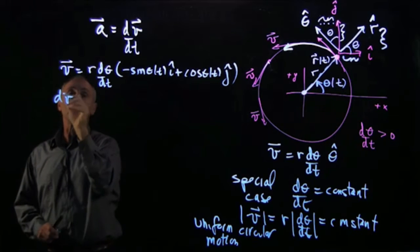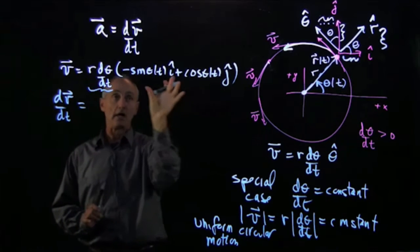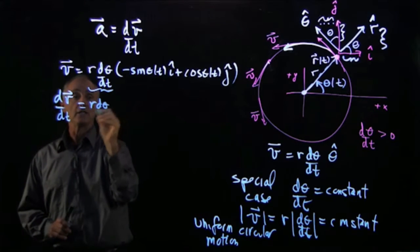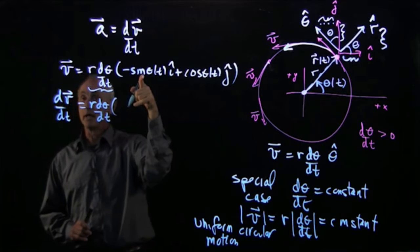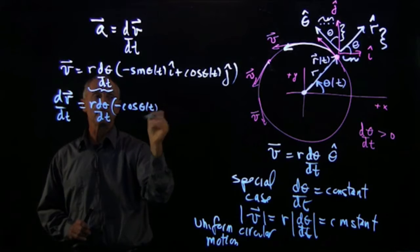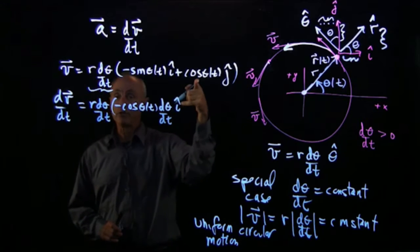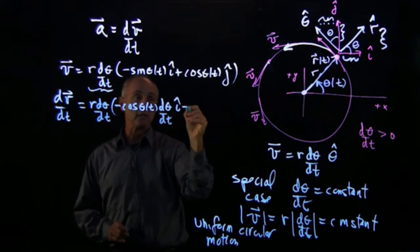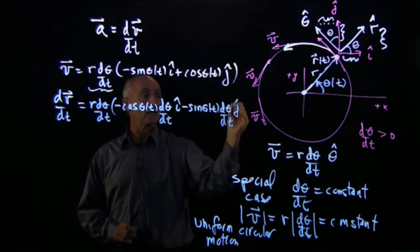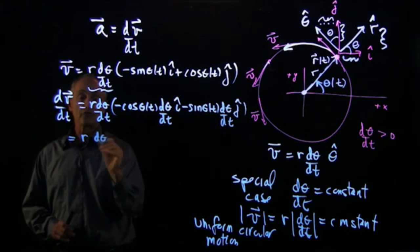So when I differentiate the velocity in time, this piece is constant. So I'm only again applying the chain rule to these two functions. So I have r dθ/dt. And I differentiate sine, I get cosine with a minus sign. So I have minus cosine θ(t) dθ/dt i hat. Over here, the derivative of cosine is minus sine dθ/dt. That's the chain rule. Sine of θ(t) dθ/dt j hat. And now I have this common dθ/dt term, and I can pull it out, and I'll square it.